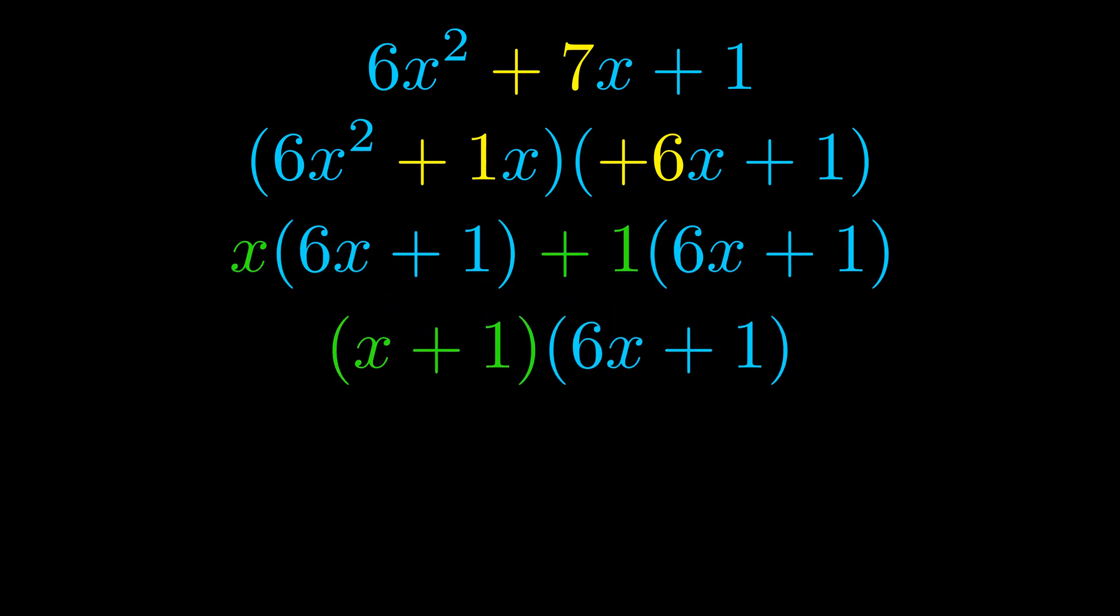Those blue values will become one of our factors and we will combine the two green values, the GCFs that we pulled out, to get the other one. And that is our fully factored equation.